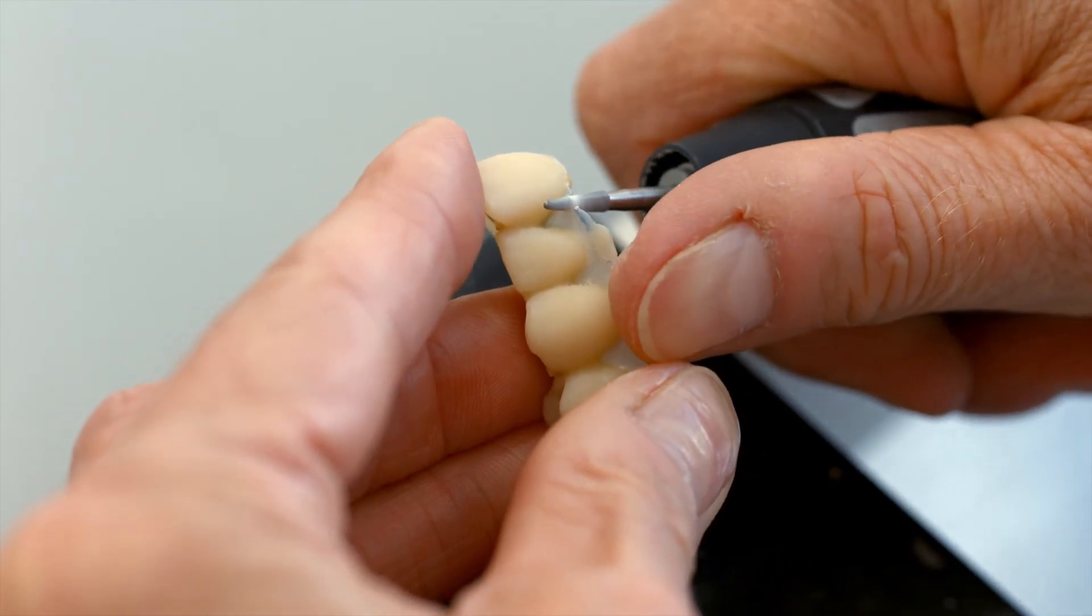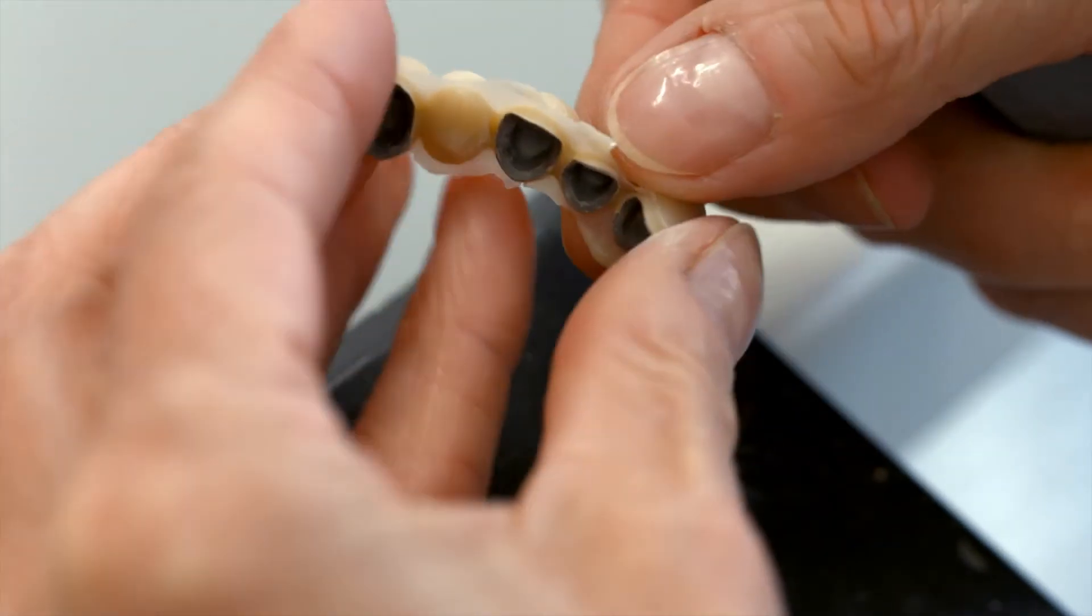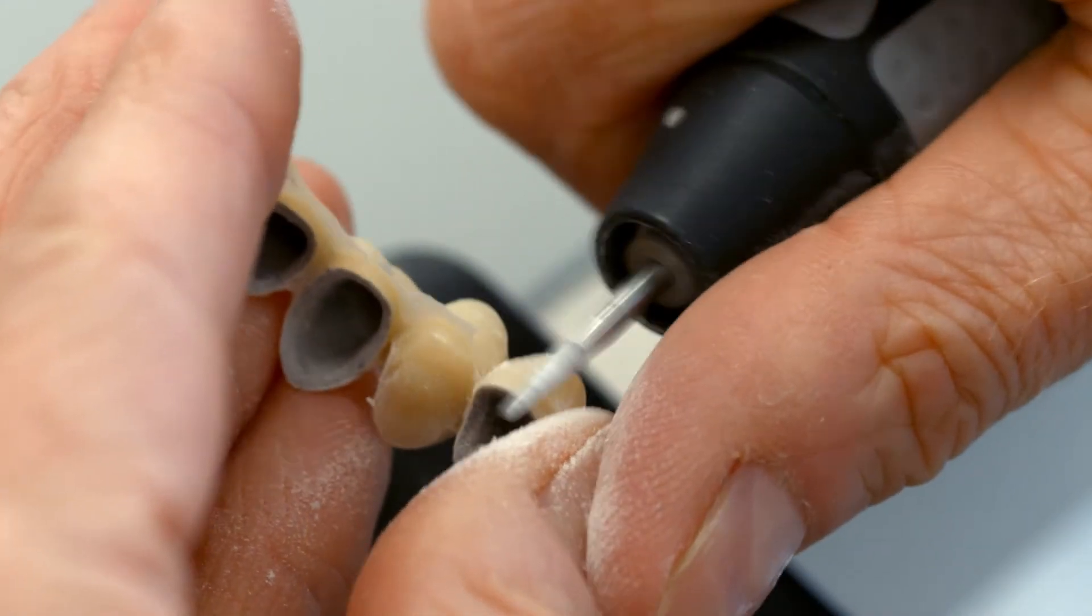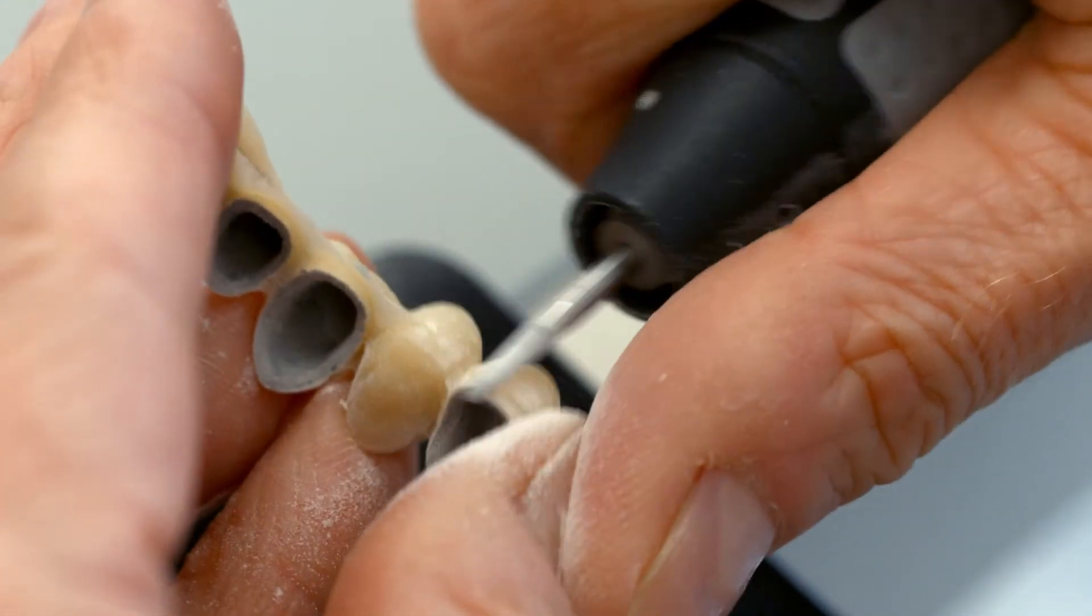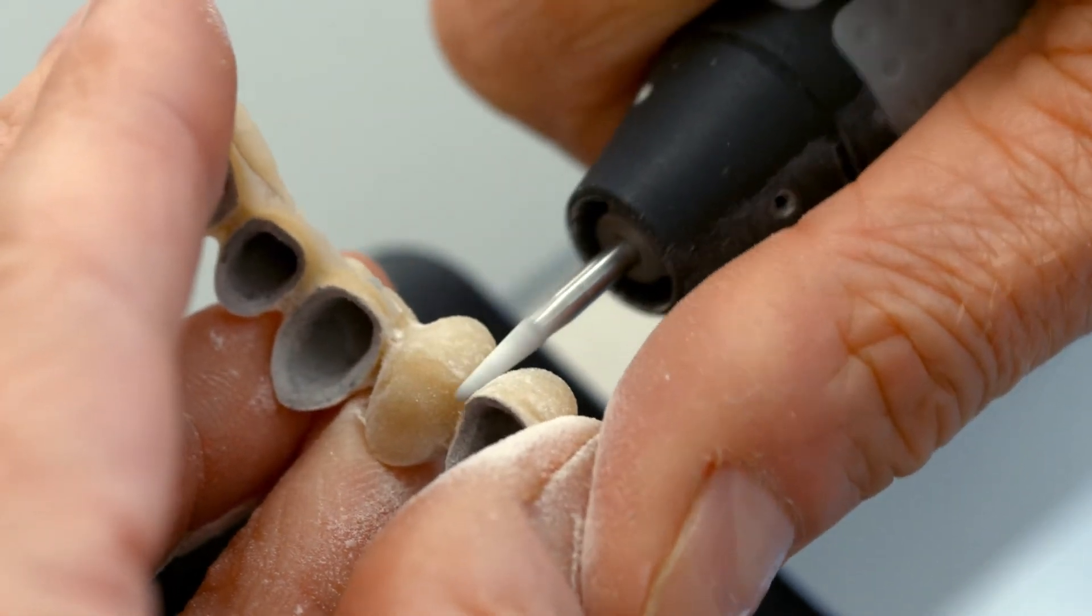A short fine line of composite flash on the bridge indicates that the mold was properly loaded with the restorative material. Remove the flash with suitable grinding instruments.